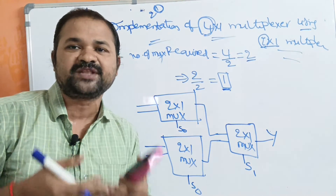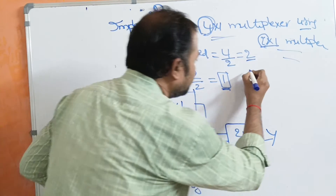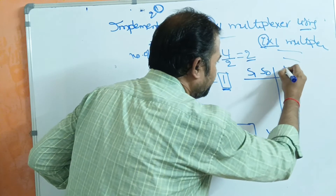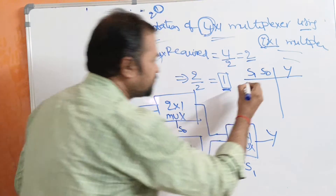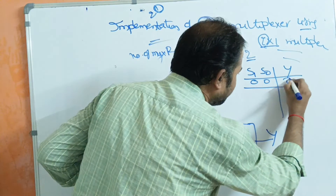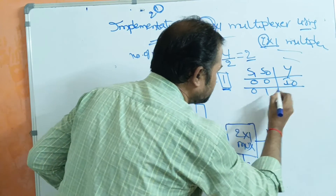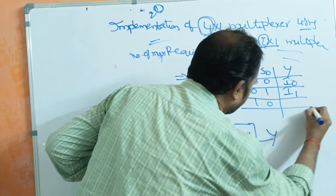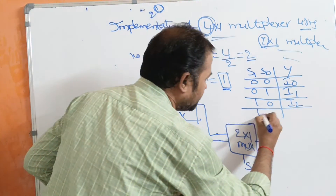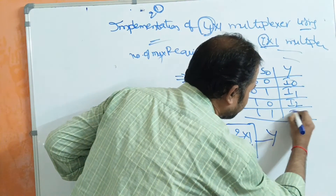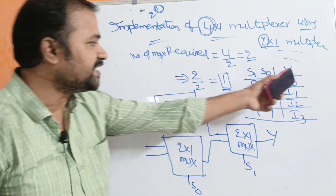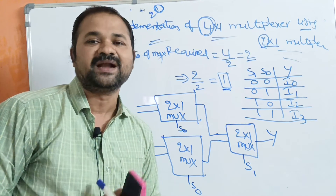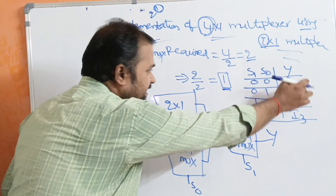We know the truth table for the 4 by 1 multiplexer. A 4 by 1 multiplexer has 2 selection inputs, S1 and S0, with output Y. If S1=0 and S0=0, the output is I0. If S1=0 and S0=1, the output is I1. If S1=1 and S0=0, the output is I2. If S1=1 and S0=1, the output is I3. Here I0 and I1 are inputs to the first multiplexer, and I2 and I3 are inputs to the second multiplexer.